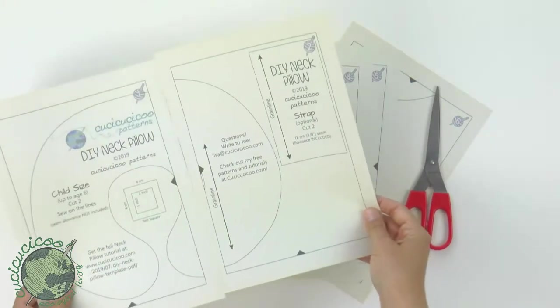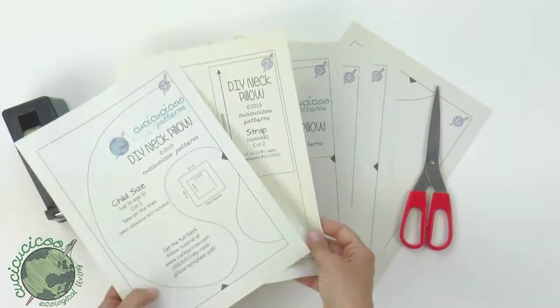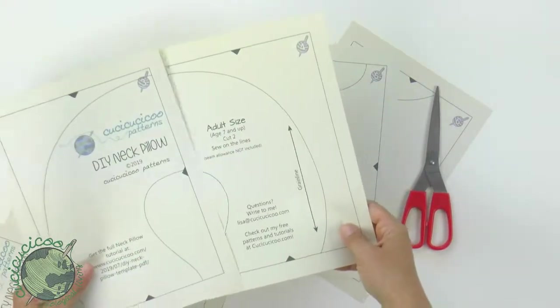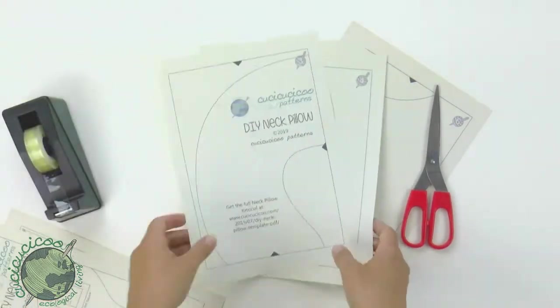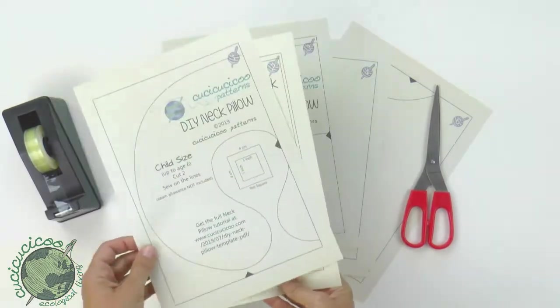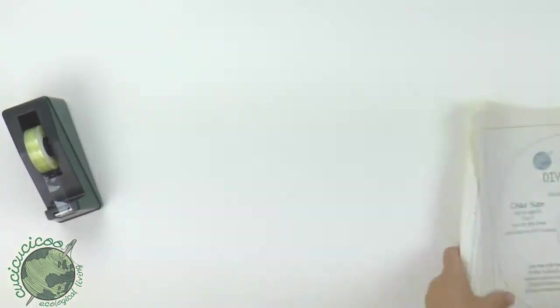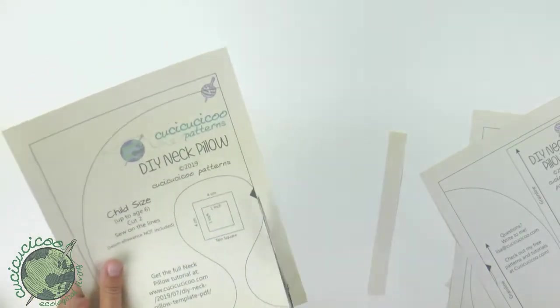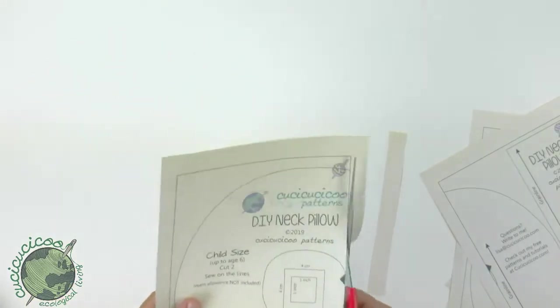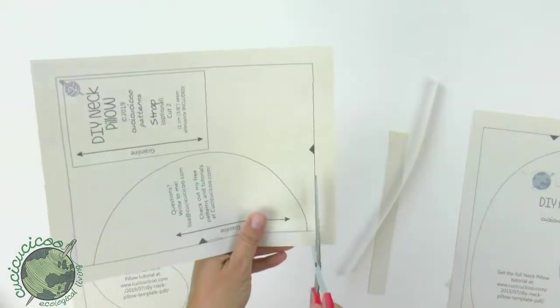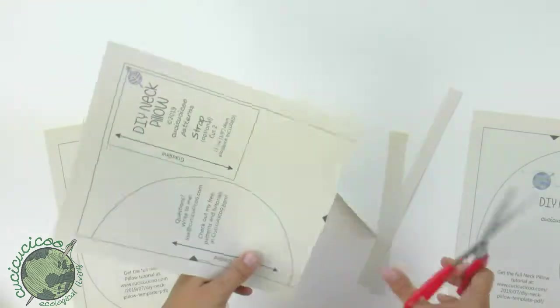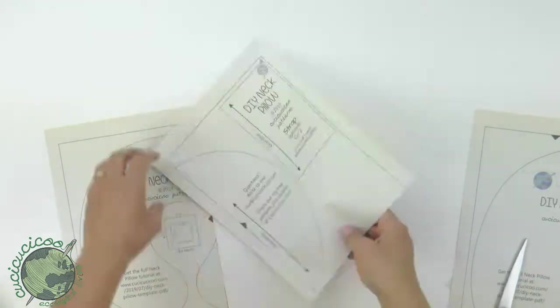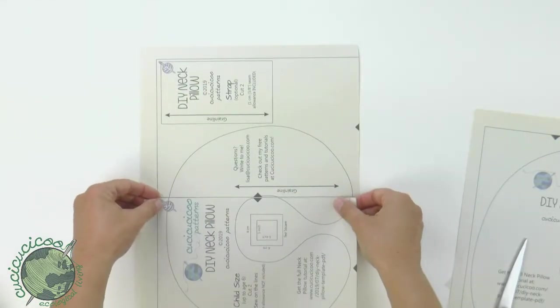The pattern has six pages. The first two are for the child size. That's for infant to about four years old. Then there's the adult size pattern. It's on pages three and four, then five and six. Let's assemble the pattern. First, you need to trim off the bottom margin and then the right hand margin as well. This one I'm just doing the bottom margin. Page two also has the strap piece. Okay, let's join up the pages.